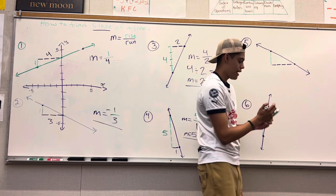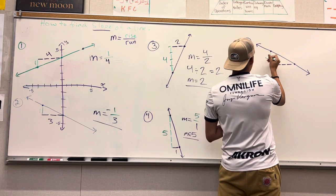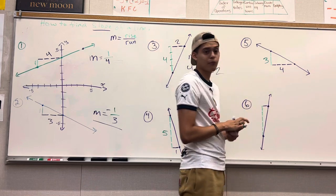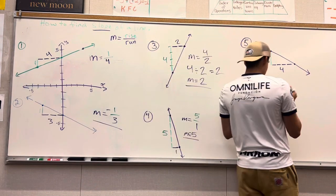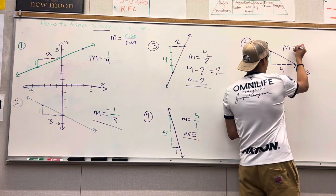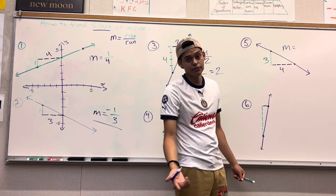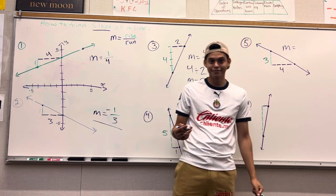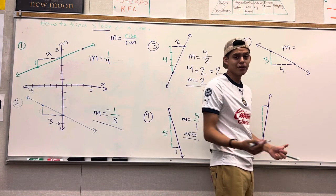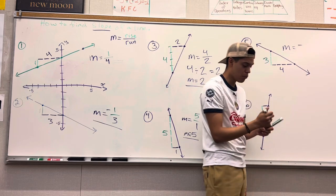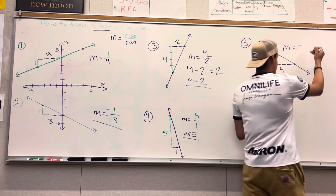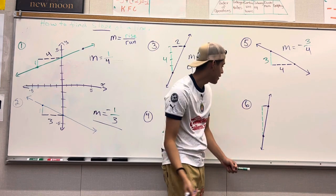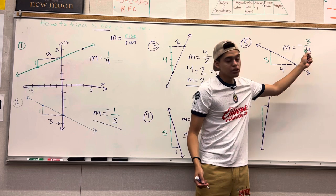Now heading on to number five. We have three dash marks going down, and then we have four dash marks going to the right. Now I want to ask you — what sign is this going to be? Is this going to be negative or positive? Hopefully you answered that it is going to be negative because you are going downhill. Remember, when you are going downhill, you are going to feel negative. So this is going to be a negative slope. The three is your rise, and your run is going to be four. So M equals negative three over four.